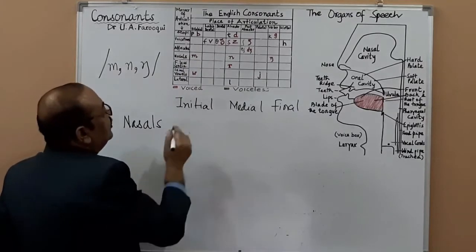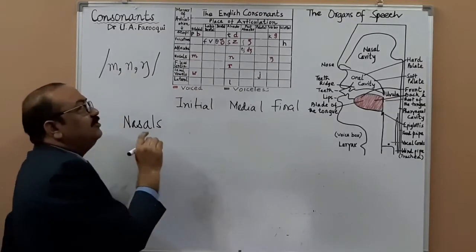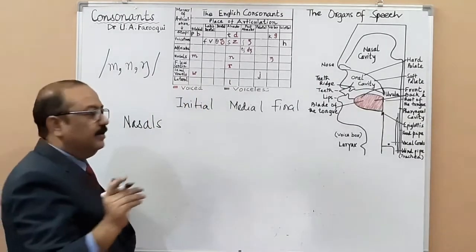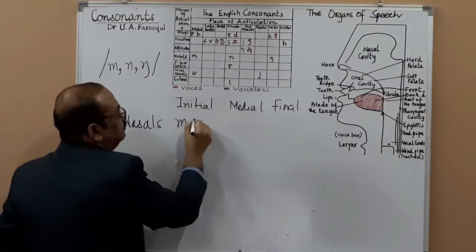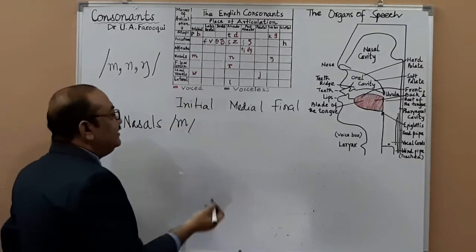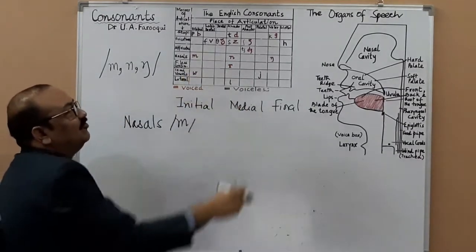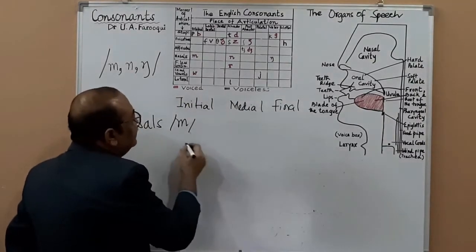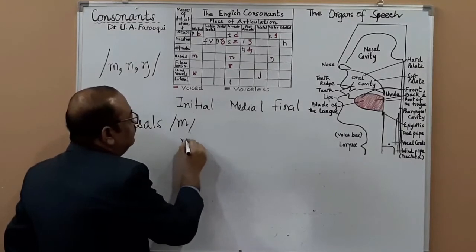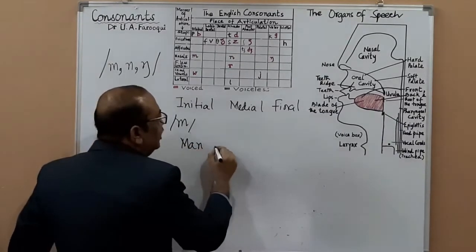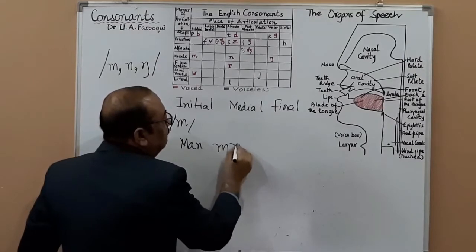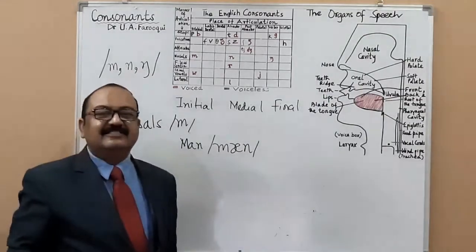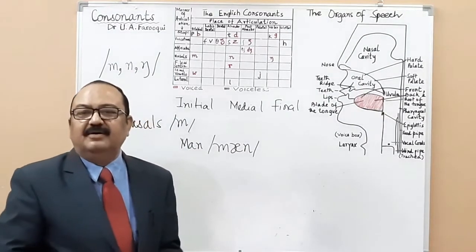We are discussing nasals — these are individual, single consonants. I'm taking /m/ first so it becomes easier. For example, 'man' — how do you write 'man'? This is how.